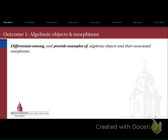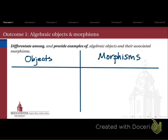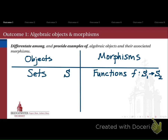The first objective of this course is that you're able to differentiate among and provide examples of algebraic objects and their associated morphisms. What it really means is that you're able to give examples and tell the difference between various algebraic objects — things like sets — and morphisms, which are functions between those objects that have certain properties attached to them.